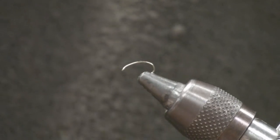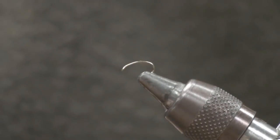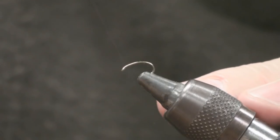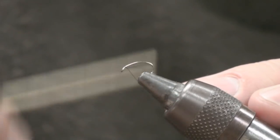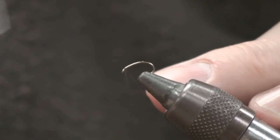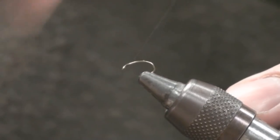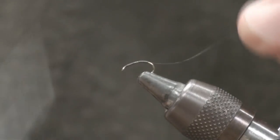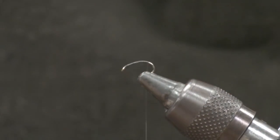So to get started, the hook that I'm using is a Tiemco 2457. This is about a size 16. I generally tie these flies in size 14 through 18 with 16 probably being my most popular. I'm going to start my thread right behind the hook eye and wind it down to just at the bend of the hook. Trim my thread.